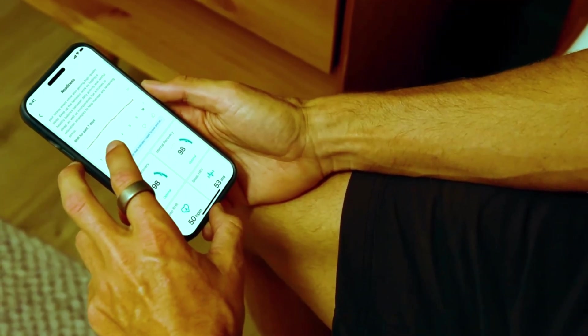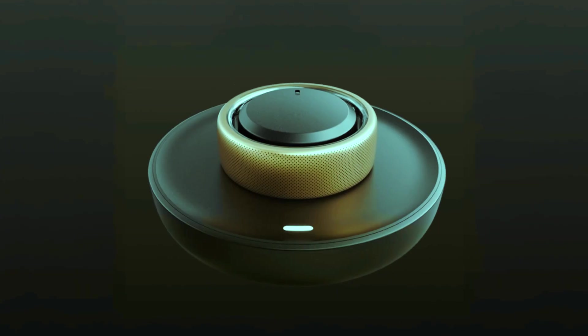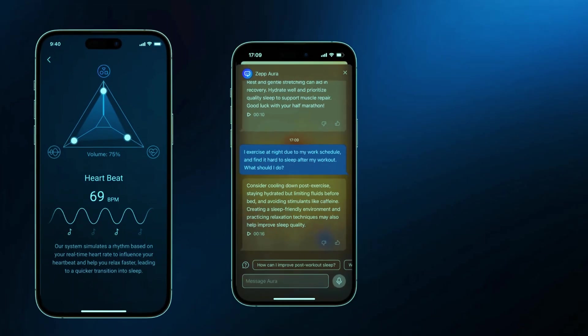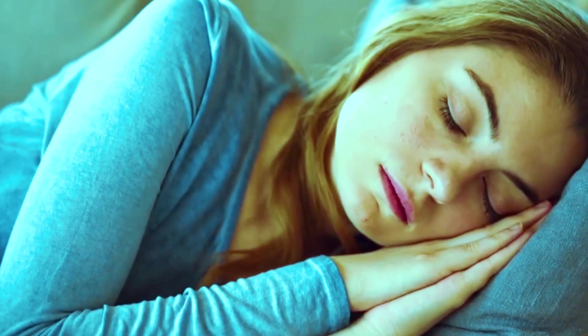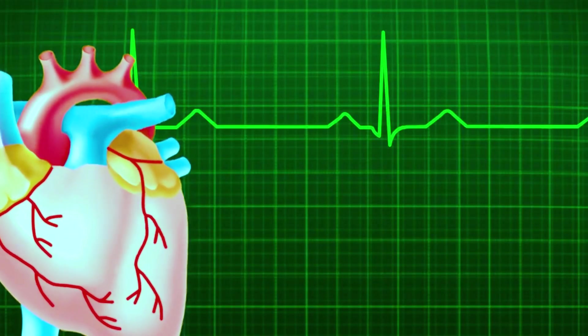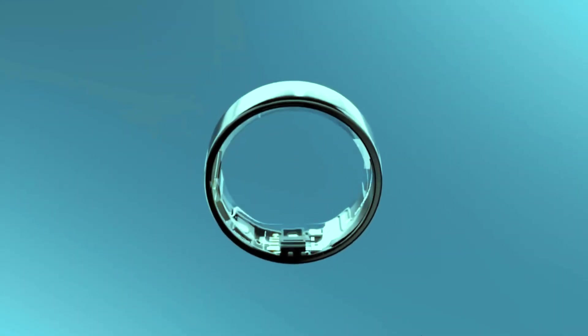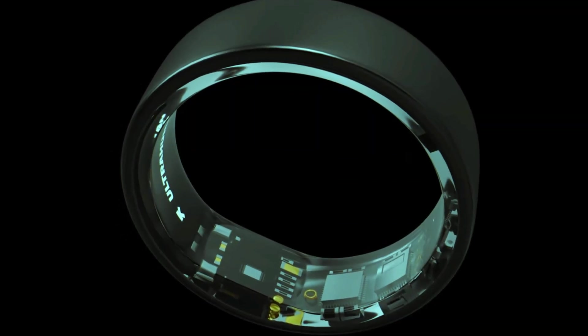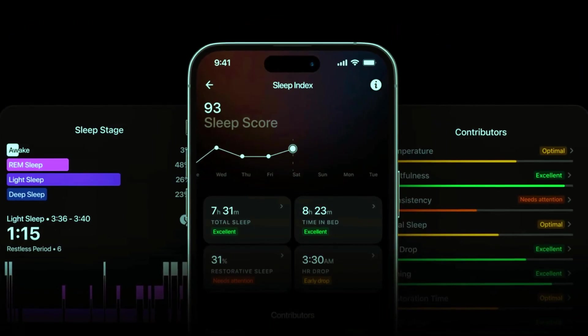Users begin to notice subtle patterns. The ring doesn't just track vitals, it anticipates crises. Sleep disturbances that seem trivial now have ominous significance. Small changes in heart rhythm hint at hidden stress or undiagnosed conditions. The ring's quiet intelligence suddenly feels alive—watching, analyzing, almost thinking ahead of them.